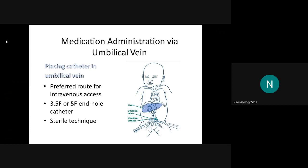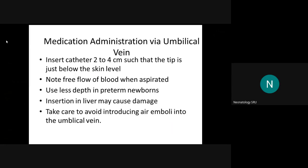Medication administration via the umbilical vein is the preferred route for IV access. A 3.5 French or 5 French umbilical catheter is used under a sterile procedure. Insert the catheter 2 to 4 cm such that the tip is just below the skin level. Confirm free flow of blood when aspirating. Insert less depth in preterm babies, as insertion into the liver may cause damage. Avoid introducing air emboli into the umbilical vein during the procedure.